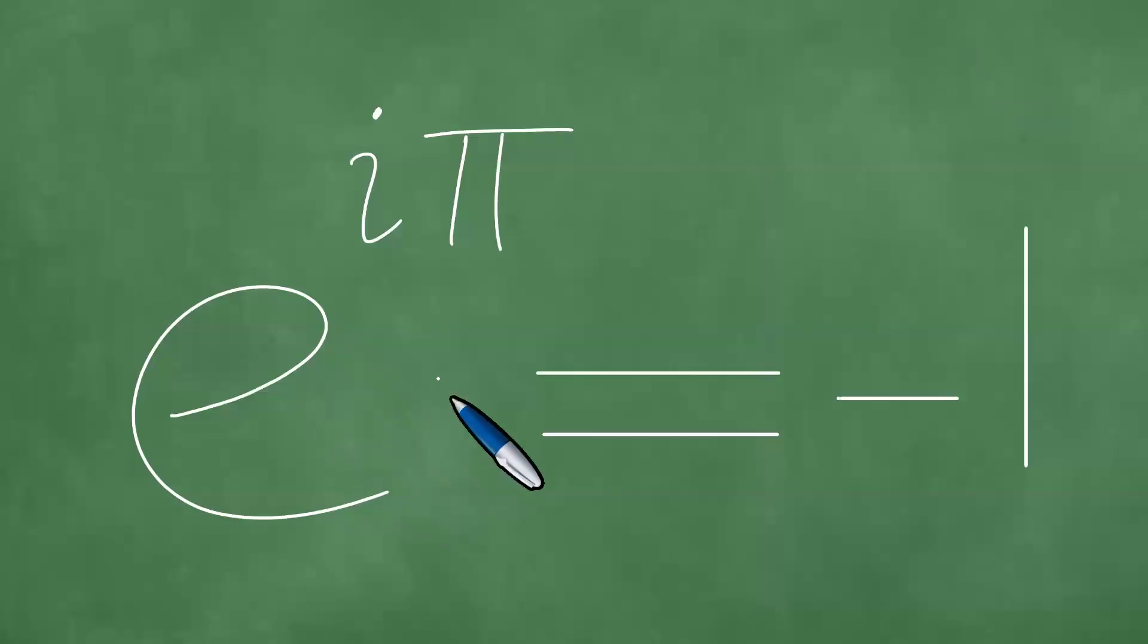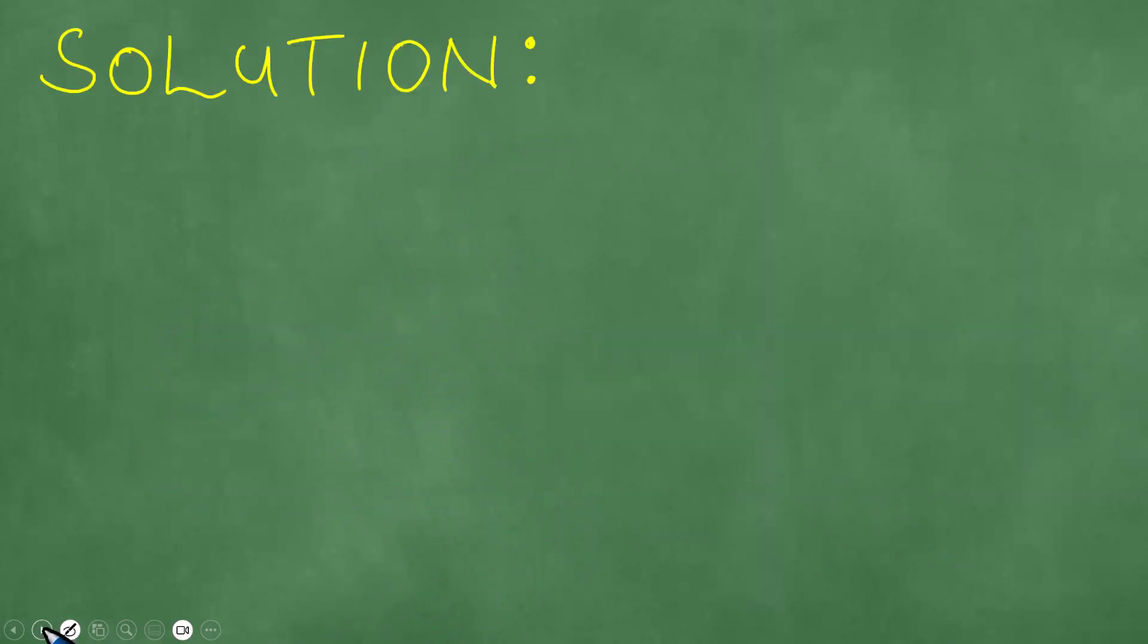We have this particular equation to prove that e to the power i pi equals minus one. This is due to Euler and it is called Euler's identity, and we proceed to prove Euler's identity.